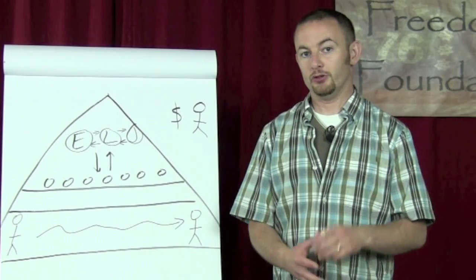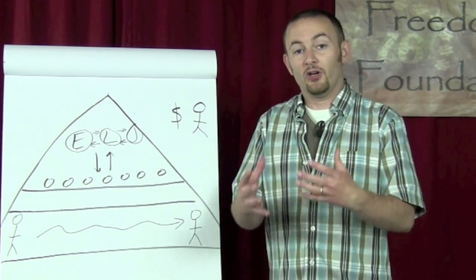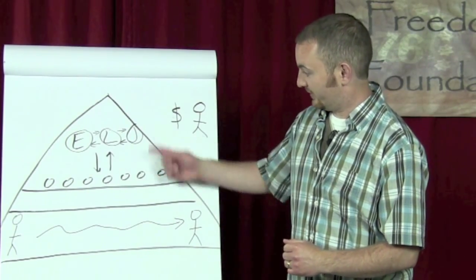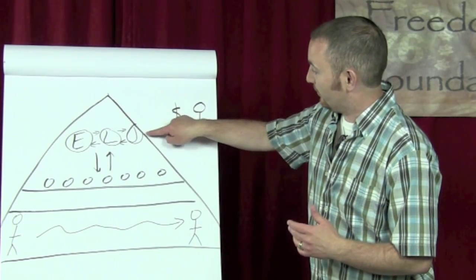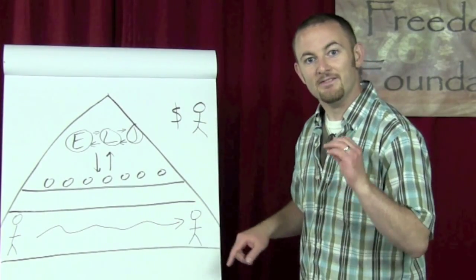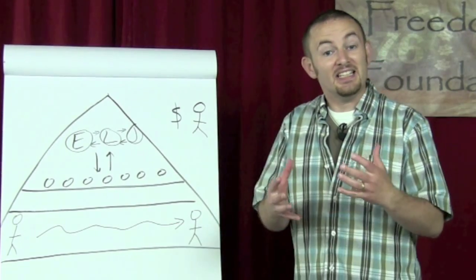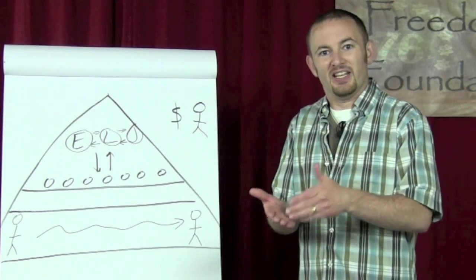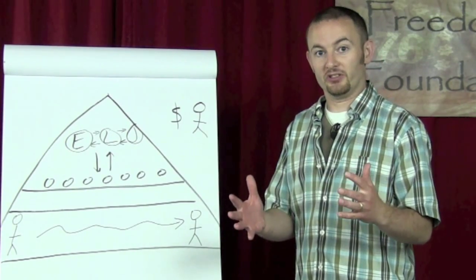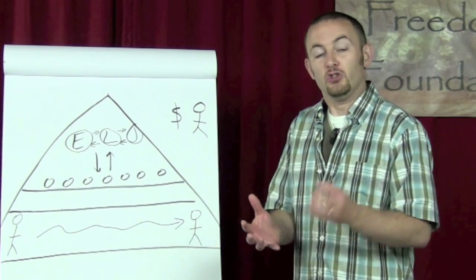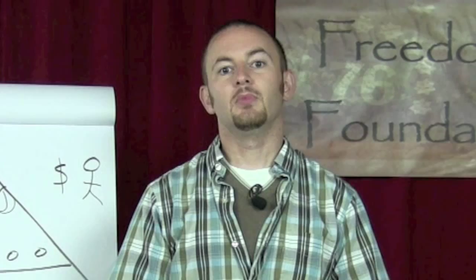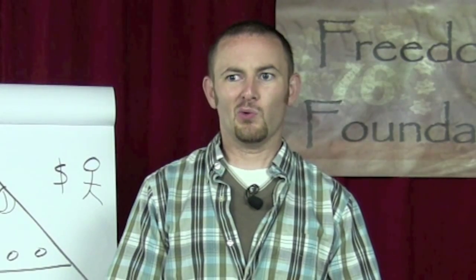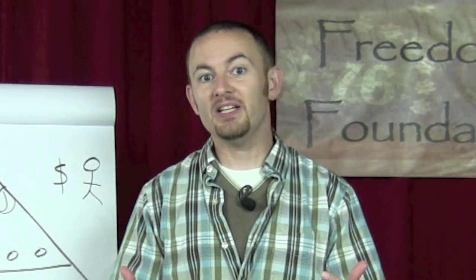Reason number three: in my introduction to the Constitution videos, you learned that our government is structured like a pyramid. If our federal government has the power to regulate basically all commerce in this country — which is how we interpret that clause today — then that completely screws up this entire structure. If the federal government has the power to come all the way down and regulate transactions between individual citizens or individual businesses, then what role do the states play in this structure? They don't really have one. Keep in mind that it was representatives of the states that came together and created the federal government — not the other way around.